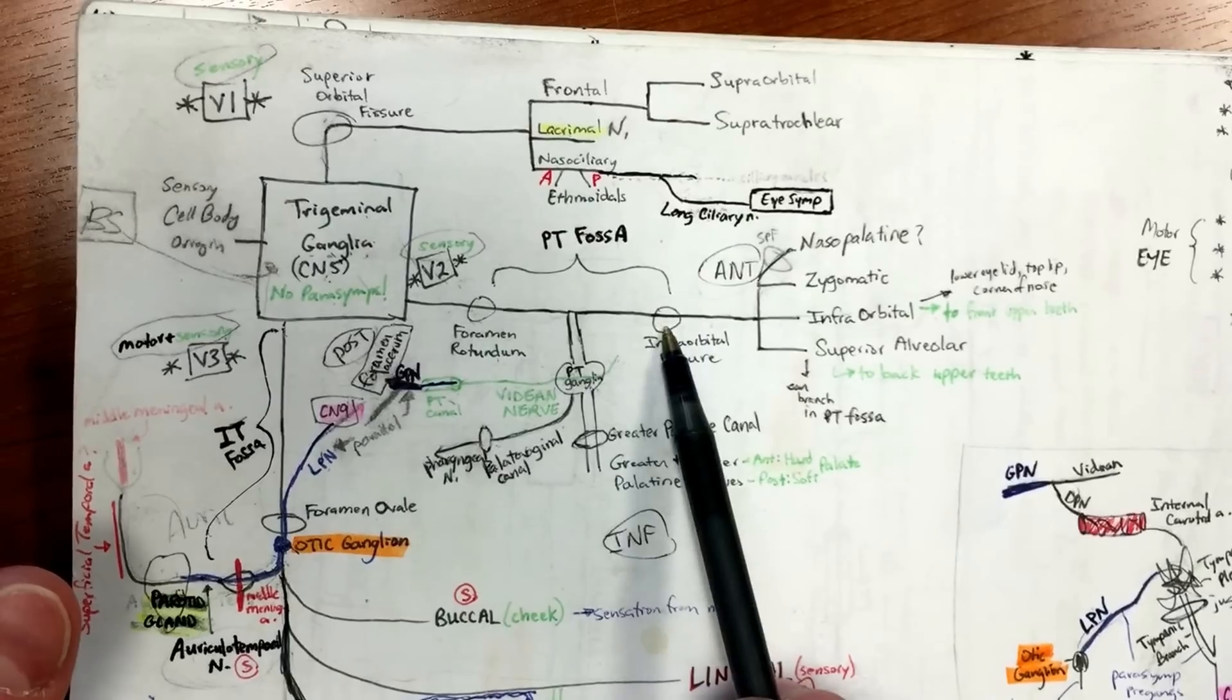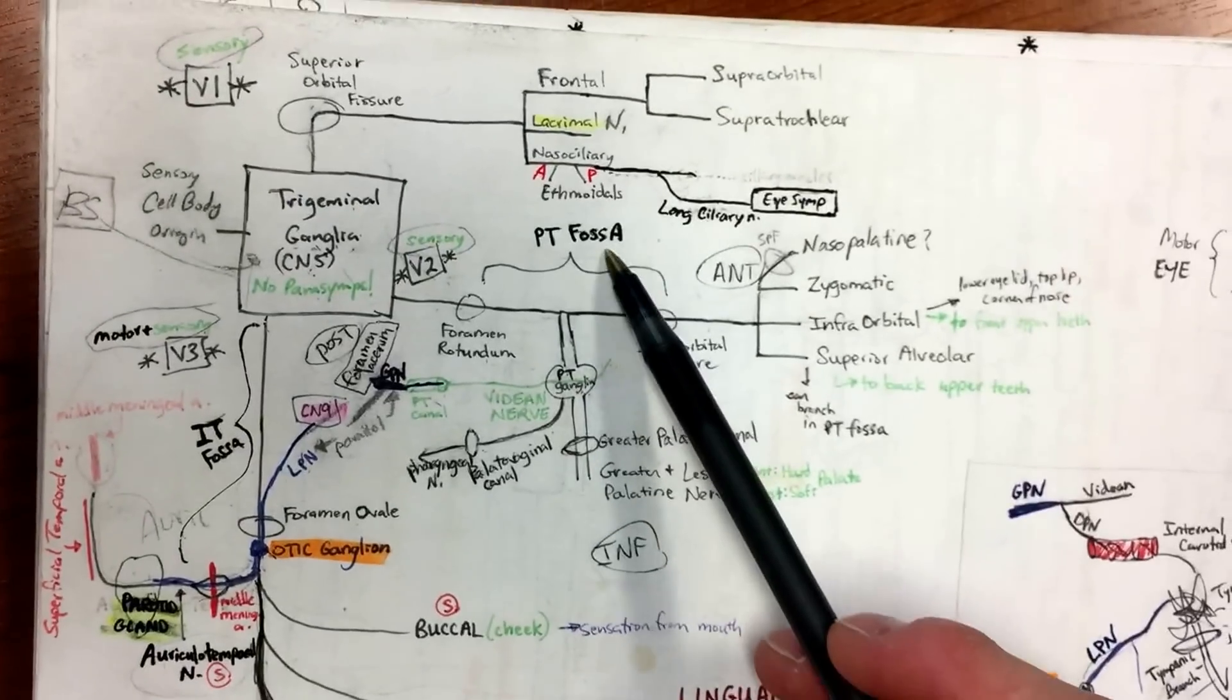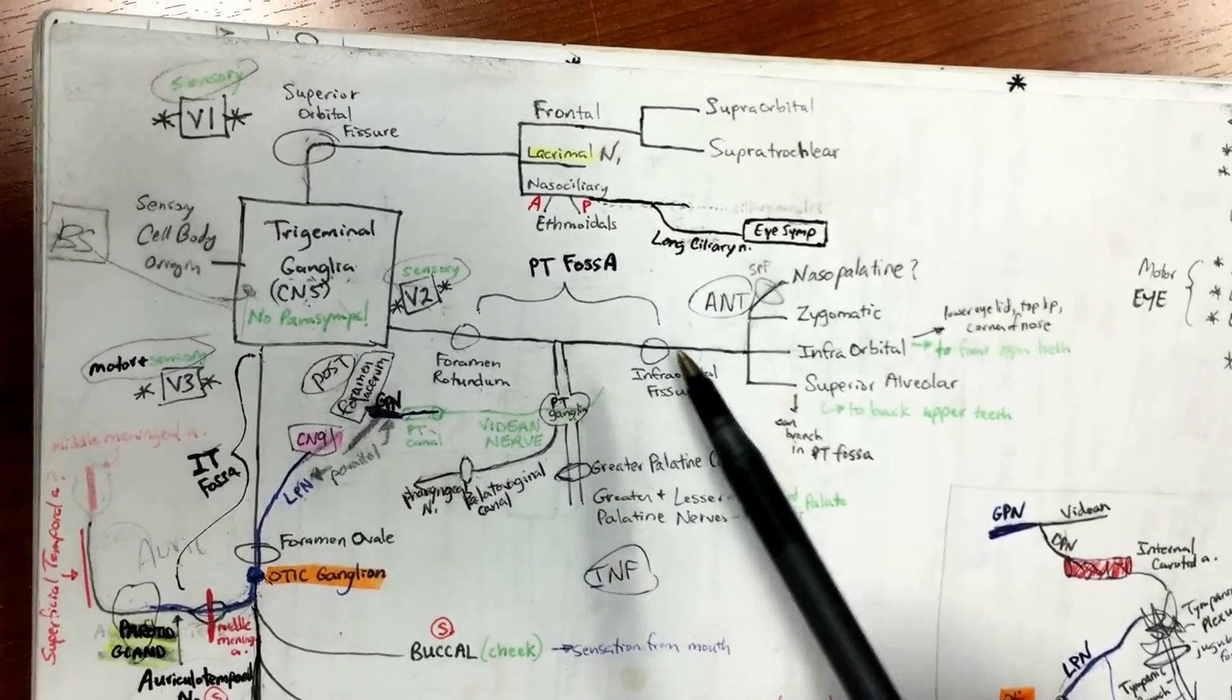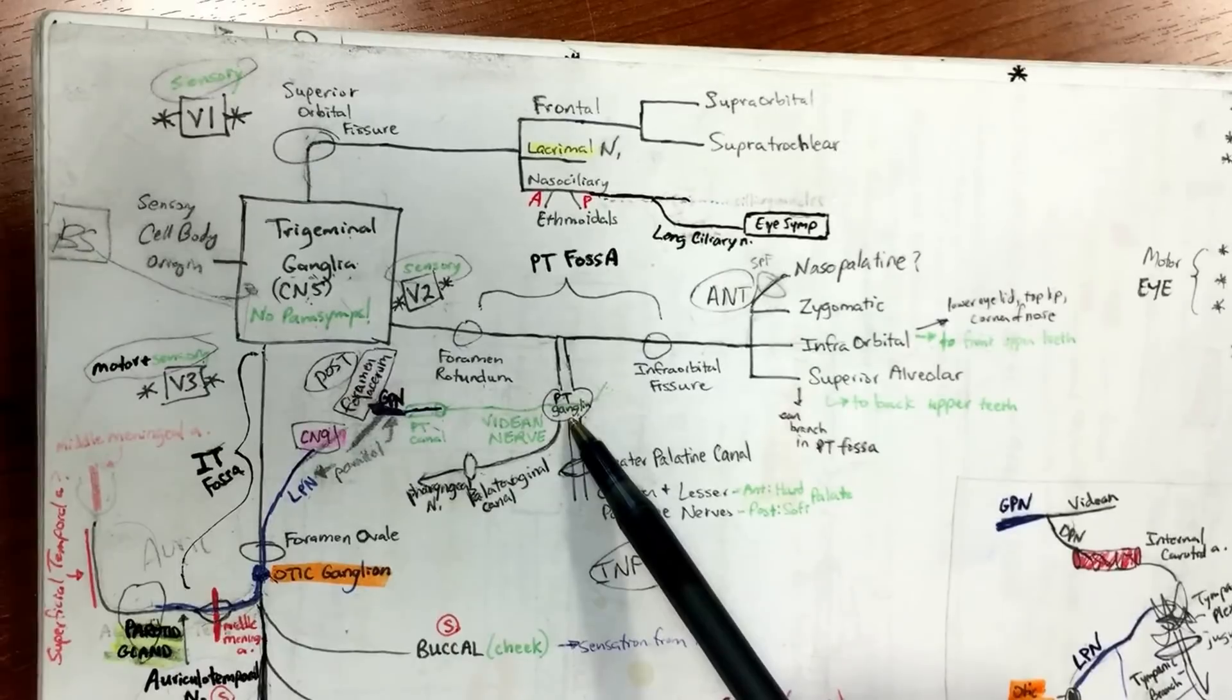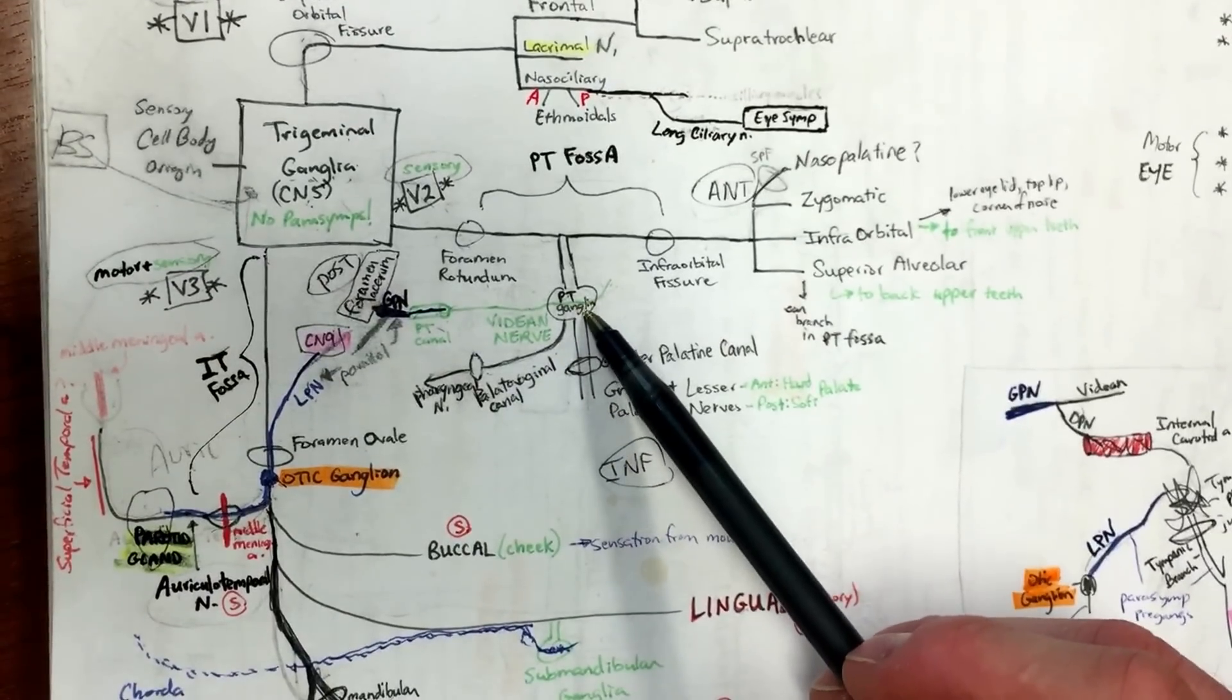V2 goes through foramen rotundum and infraorbital fissure under the eye. Whenever you have two fissures or foramens, it's probably a canal or a fossa. So which fossa is this? PT fossa. And if we're thinking of PT fossa, then it's gonna have a ganglion, and that's PT ganglion. Which nerve comes in and synapses at PT ganglia?